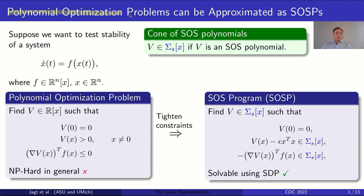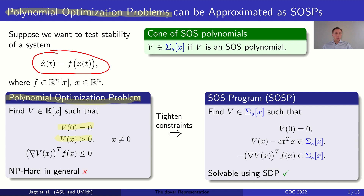Polynomial optimization problems occur quite a bit when studying non-linear systems. For example, to test the stability of a non-linear system, we can solve a polynomial optimization problem where we look for a positive definite Lyapunov function which decreases along solutions to the system. In many cases we will tighten these positivity constraints to SOS constraints, using Sigma_S to denote the set of SOS polynomials.